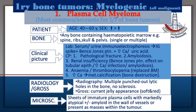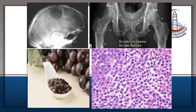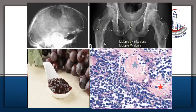Grossly it is a currant jelly tumor with multiple lytic lesions shown in the X-ray. Under the microscope there are sheets of immature plasma cells and amyloid formation. The radiologic features show multiple lytic lesions in the skull and pelvic bone. Grossly the tumor appears soft and hemorrhagic. Under the microscope it is hypercellular with multiple abnormal pleomorphic plasma cells and amyloid formation.